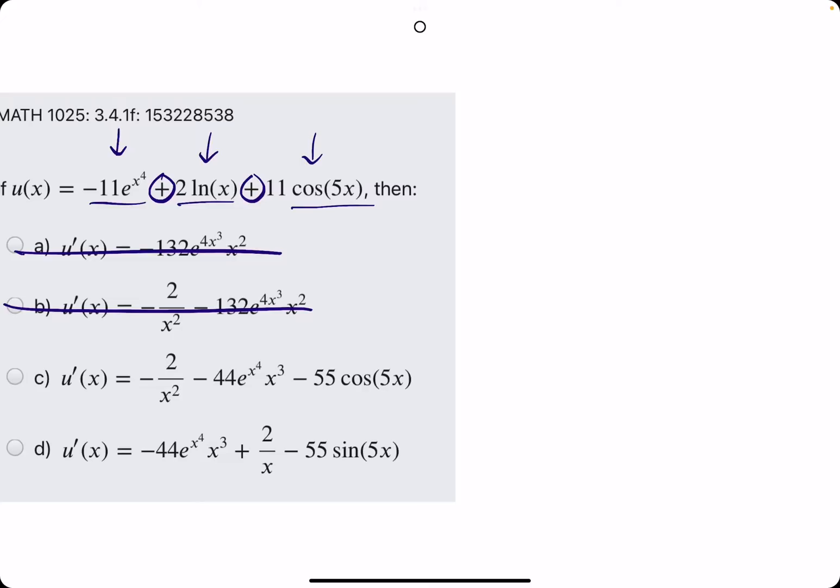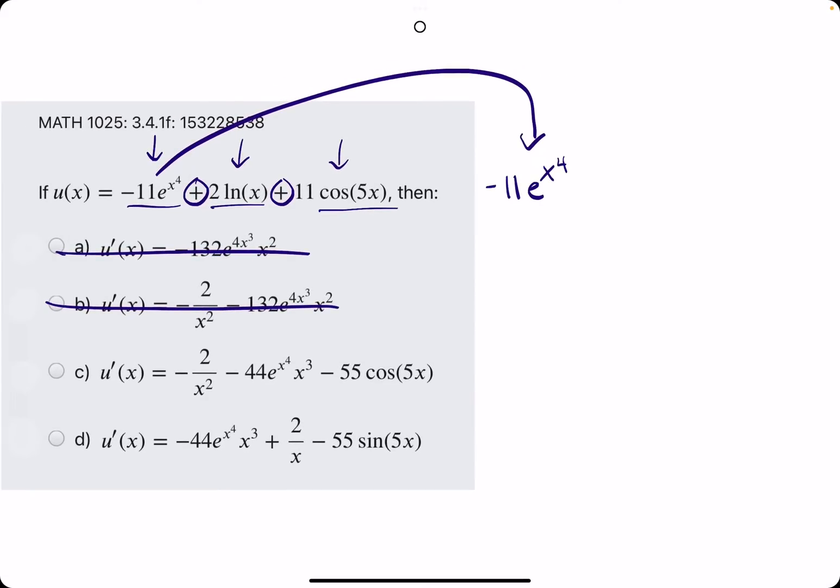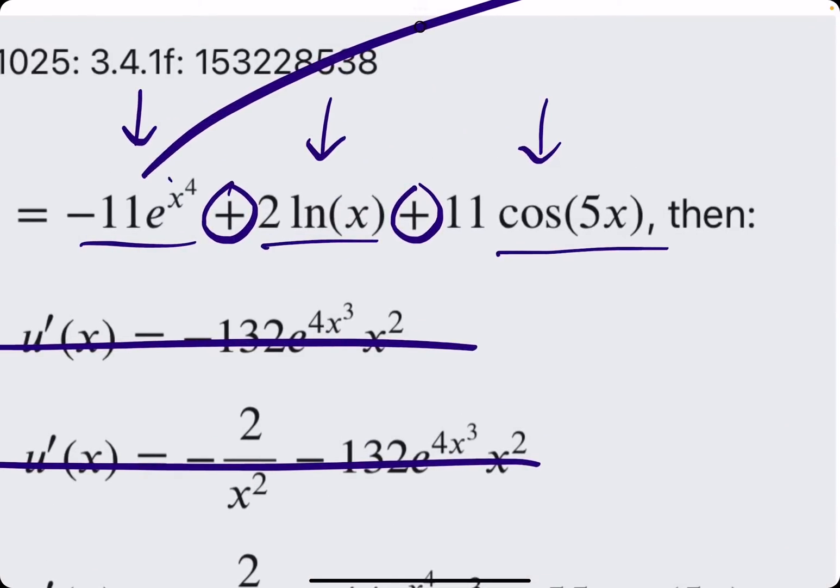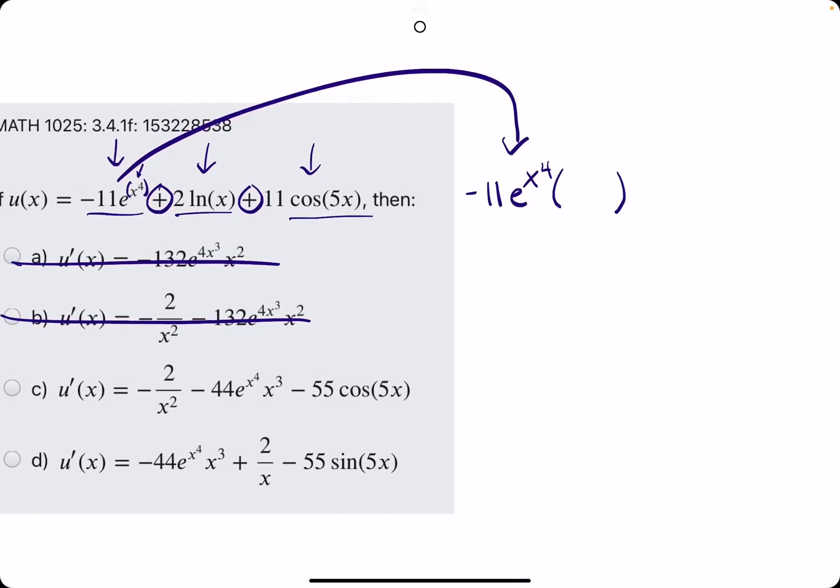So, let's jump into the first derivative of this first term, negative 11e to the x to the fourth. Using a little bit of chain rule here, the negative 11 is the coefficient, so that'll always stay in the derivative. It'll always carry through. e to the something, or e to the x, has a derivative of e to that something, or e to the x. So, that e term, any e term, when you take the derivative, will always stay the same. But then, using chain rule, we still have to multiply what we have by the derivative of the inside. The derivative of the inside is 4x cubed, because our inside was x to the fourth. So, this is our derivative of the whole first term.